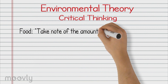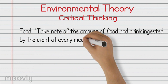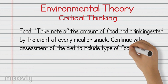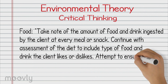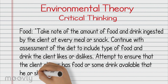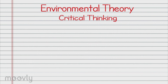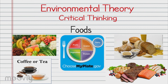Take note of the amount of food and drink ingested by the client at every meal or snack. Continue with the assessment of the diet to include type of food and drink the client likes or dislikes. Attempt to ensure that the client always has some food or drink available that he or she enjoys. Make sure Johnny has a choice of healthy foods that includes grains, protein, vegetables, fruits, and dairy.